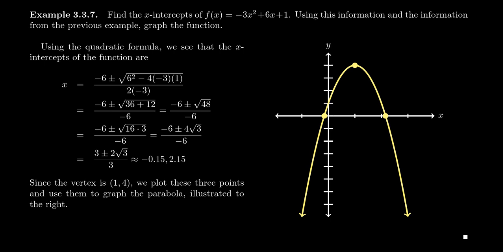We could try to factor, although this one doesn't factor very nicely at all. By the quadratic formula, we get negative b, which is going to be a negative 6. Our values are a equals negative 3, b equals 6, and c equals 1.